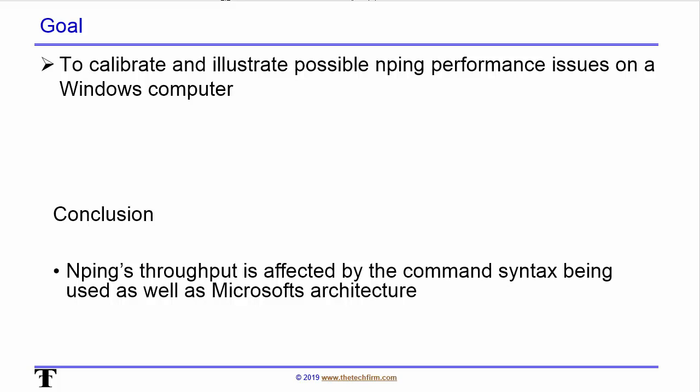nMap and nPing come in various versions for different operating systems. The problem is you're going to generate traffic and assume that what you sent out is exactly what comes out on the wire. I want to see if that's the case. Spoiler alert: nPing's throughput is affected by the command syntax being used as well as Microsoft's architecture.